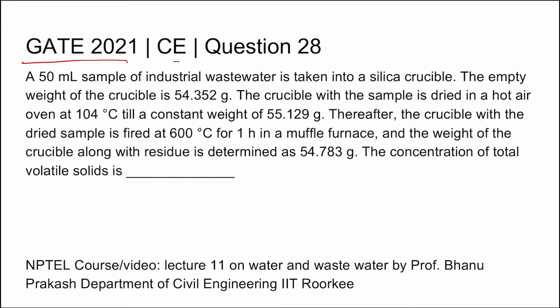GATE 2021 Civil Engineering, Question 28, Set 1. A 50 mL sample of industrial wastewater is taken into a silica crucible. The empty weight of the crucible is 54.352 grams. The crucible with the sample is dried in hot air at 104°C until a constant weight of 55.129 grams. Thereafter, the crucible with the dried sample is fired at 600°C for one hour in a muffle furnace, and the weight of the crucible along with residue is determined as 54.783 grams. The concentration of total volatile solids is to be found.